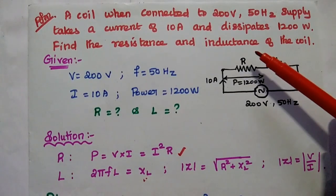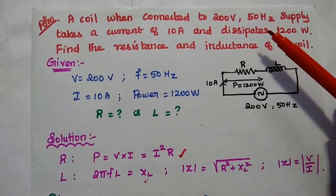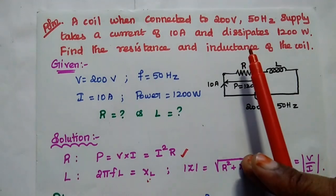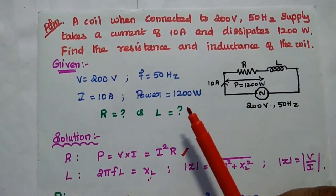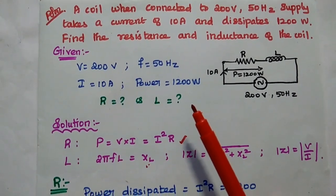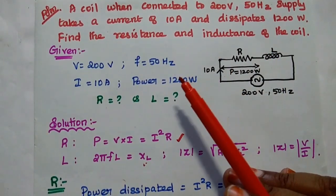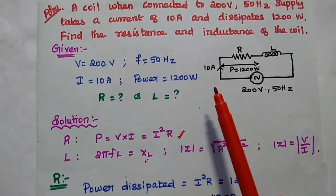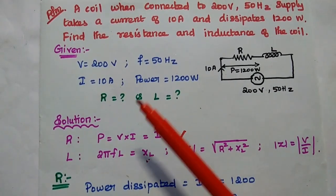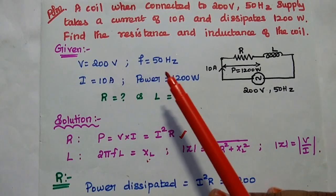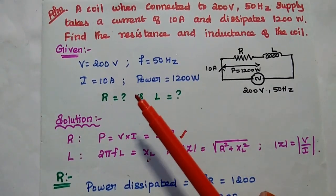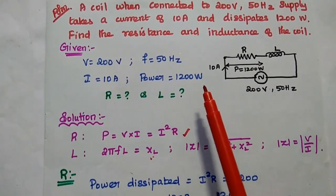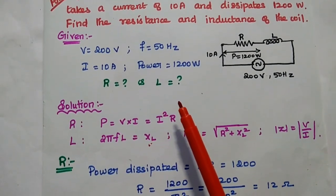The next problem: A coil, when connected to a 200 volt 50 hertz supply, takes a current of 10 ampere and dissipates 1200 watt. Find the resistance and inductance of the coil. In this problem, we are going to find out the resistance and inductance. The data given are: voltage 200 volt, frequency 50 hertz, current 10 ampere, and power dissipated 1200 watts.